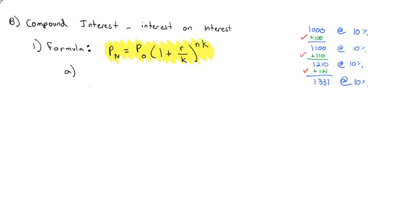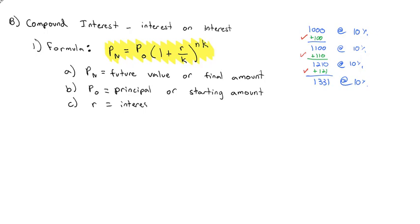Let's define each of these terms really quick. First, the P sub n. That is the future value of the account or the final amount. We also see the P sub 0. We've seen that before. It is the principal or the starting amount. We've seen R before. That's the interest rate. Of course, that interest rate needs to be written as a decimal.